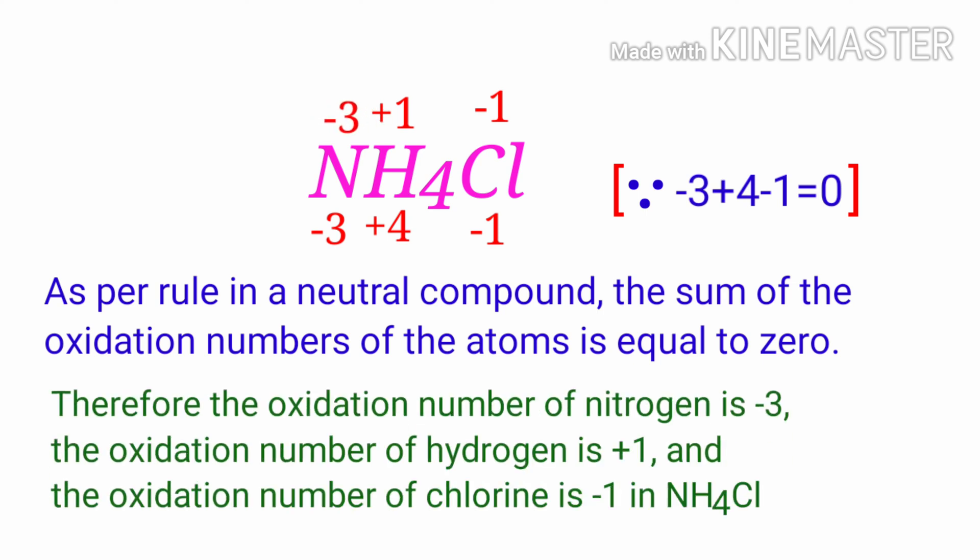Therefore, the oxidation number of nitrogen is minus three, the oxidation number of hydrogen is plus one, and the oxidation number of chlorine is minus one in ammonium chloride.